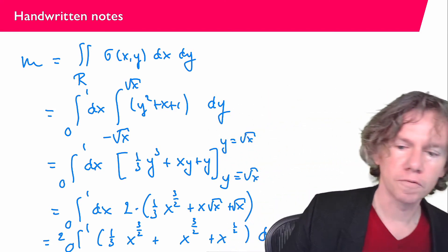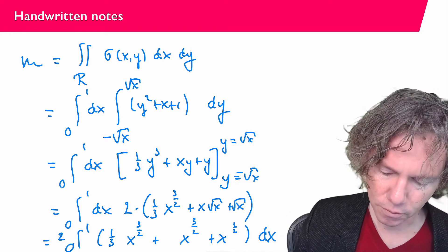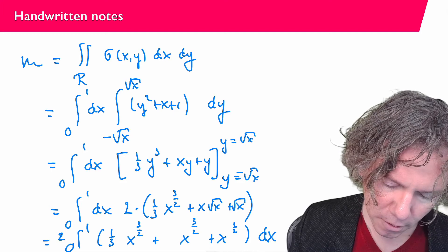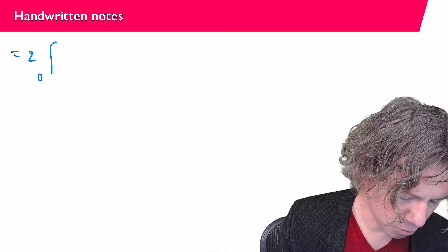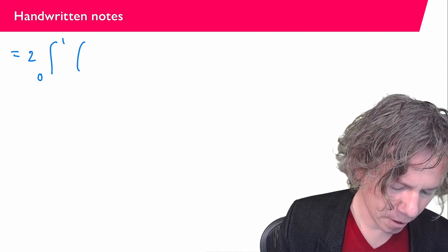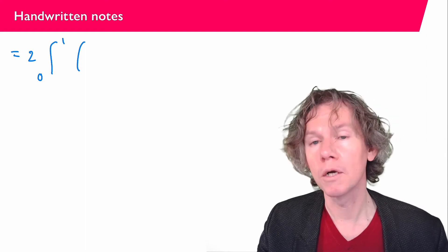I should move a little bit like this so that you can see it. And then let's go to the last bit of this question. So we had... Let me copy from the previous slide. 2 times the integral from 0 to 1. And then we had 1 over 3 times x to the power of 3 over 2 plus 1 times that same thing. So together that becomes 4 over 3 x to the power of 3 over 2 plus x to the power of 1 half dx.